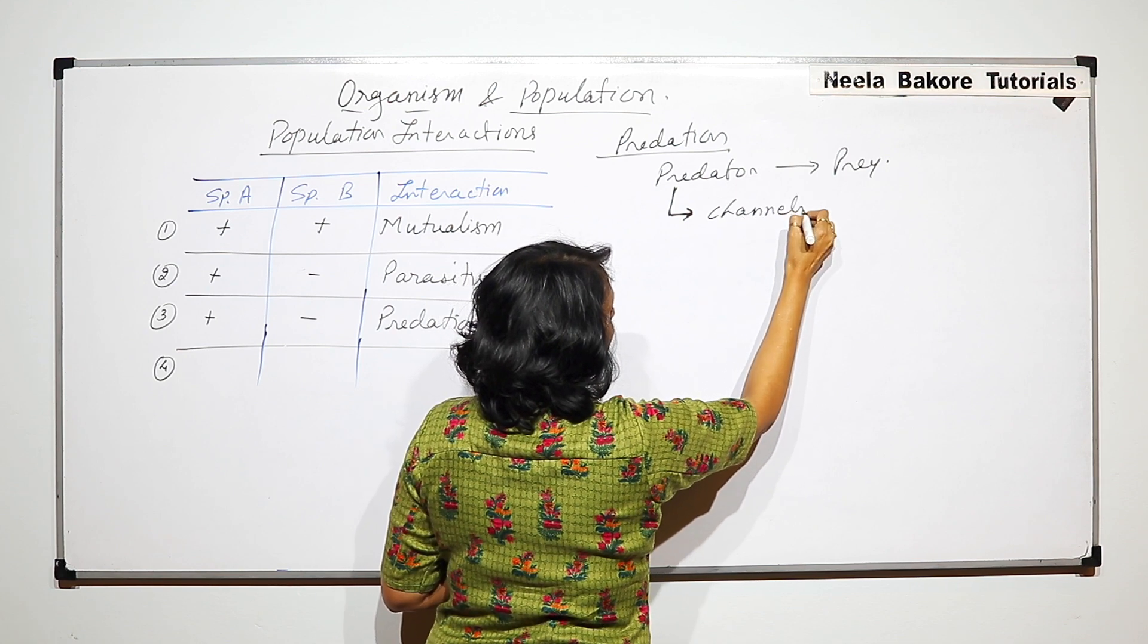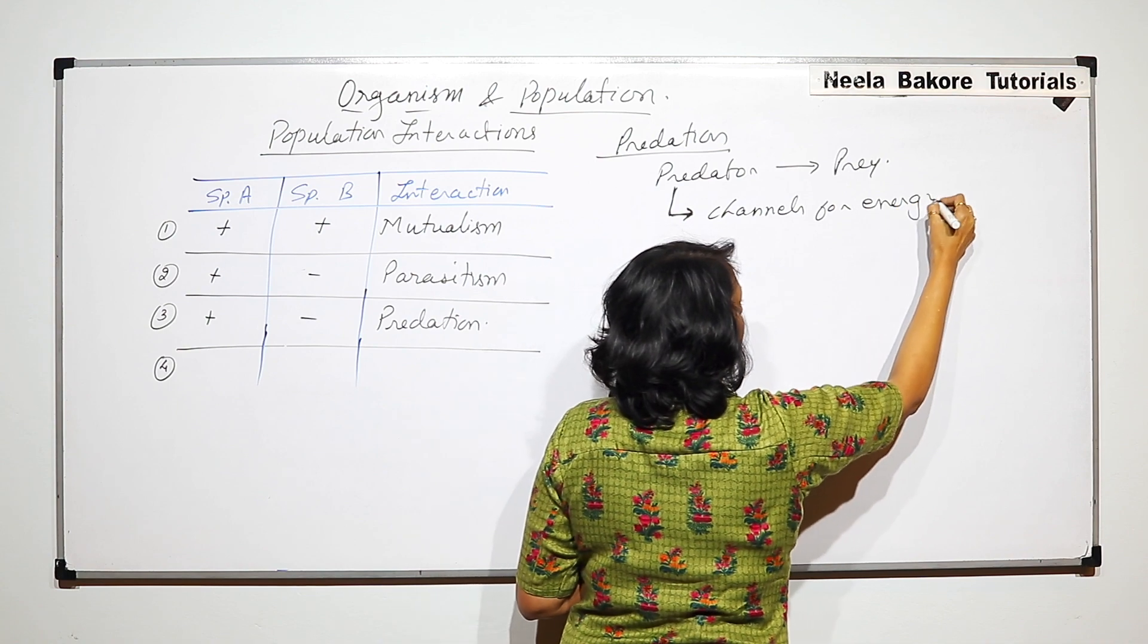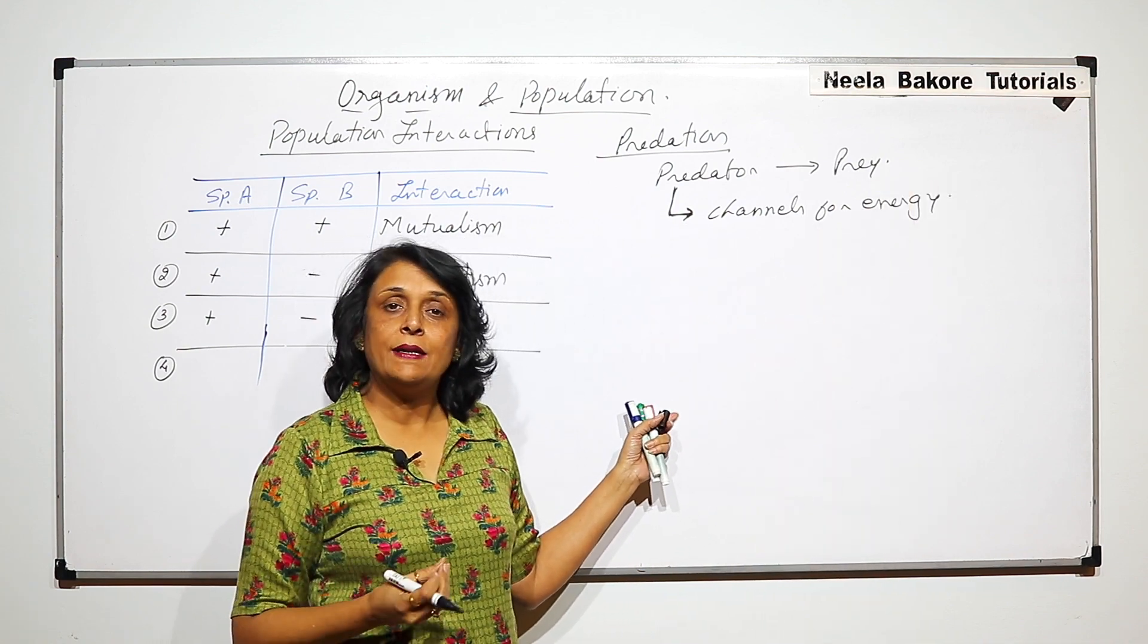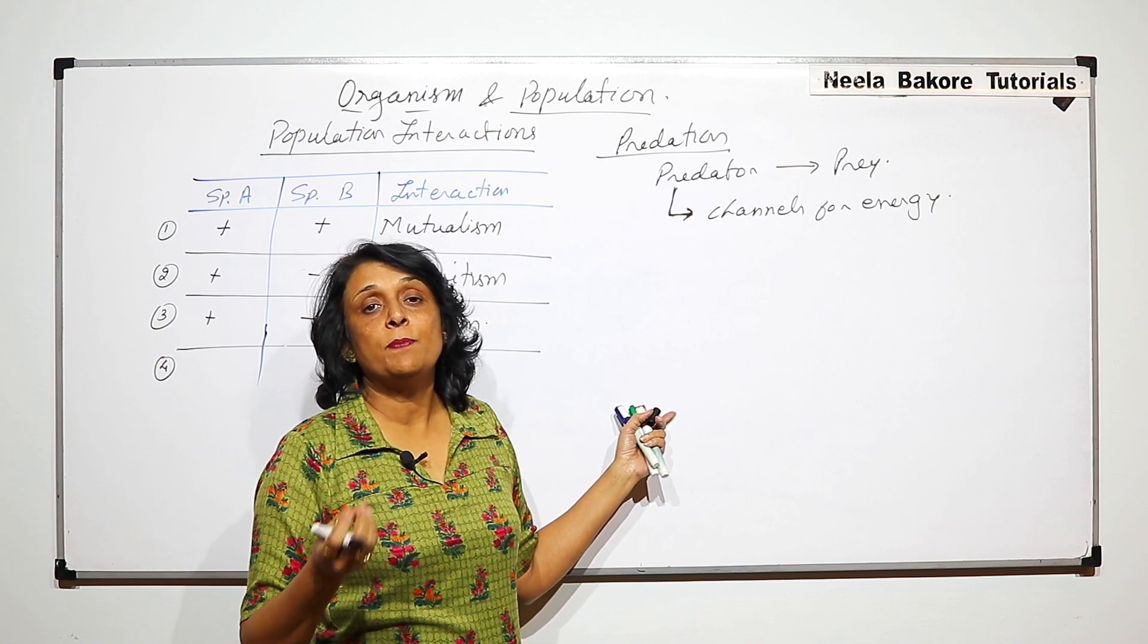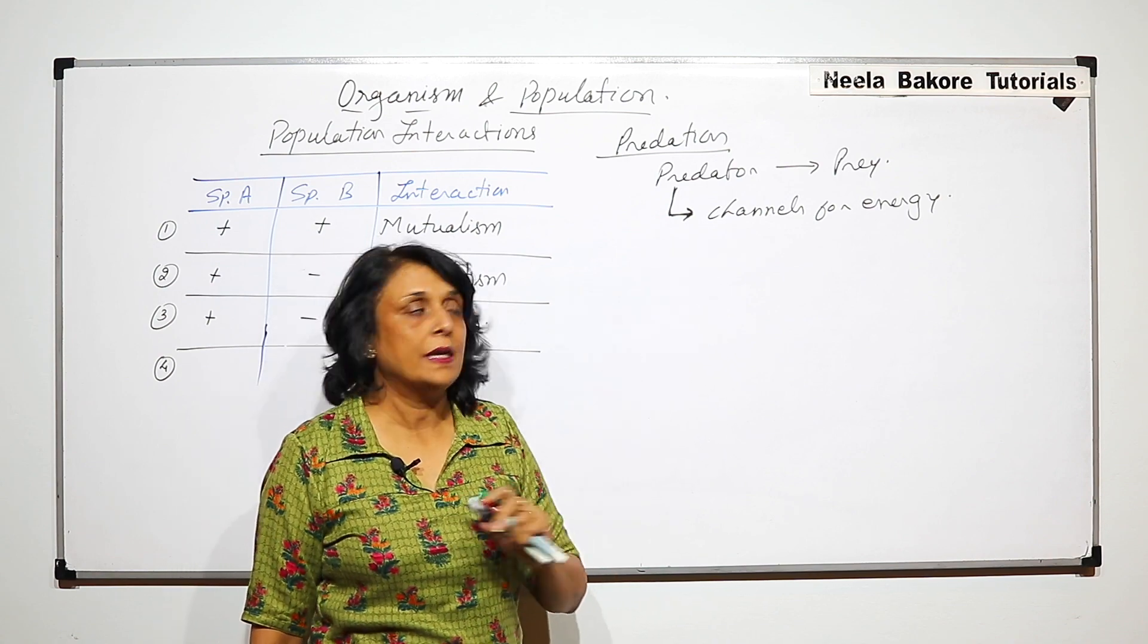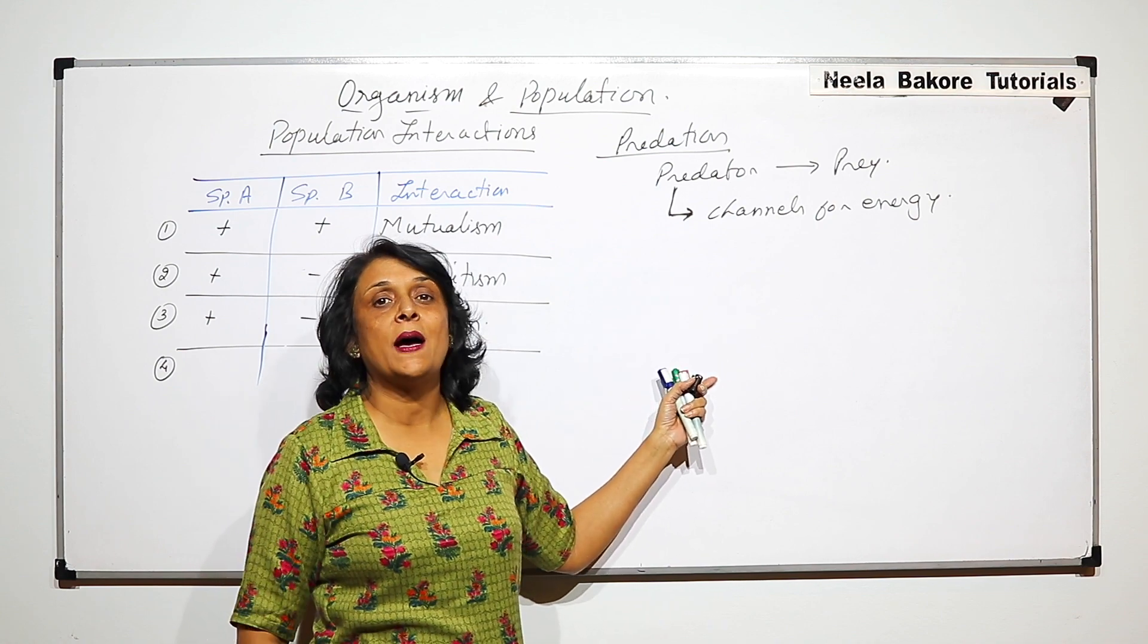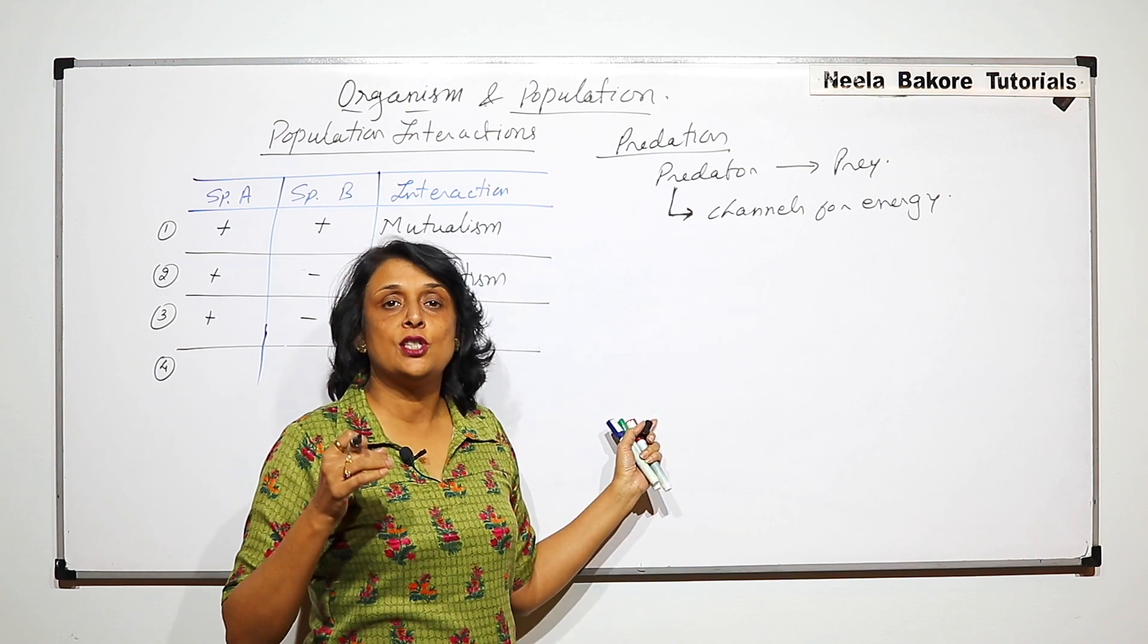We know that all organic matter is synthesized by producers, that is plants. These plants are consumed by herbivores, and herbivores are eaten up by these predators or carnivores. This is how food or energy is passed from one trophic level to the other, so they're acting as channels of energy transfer.